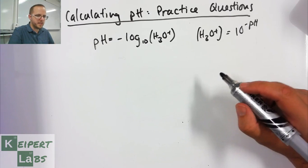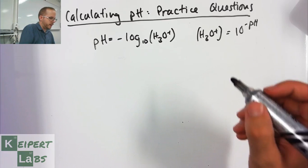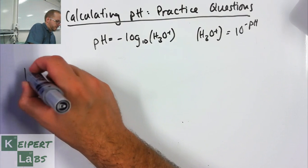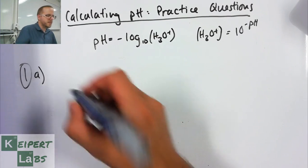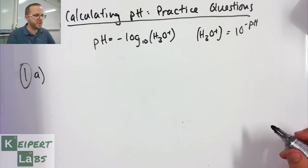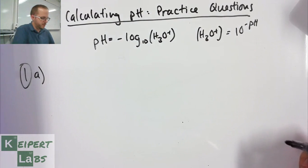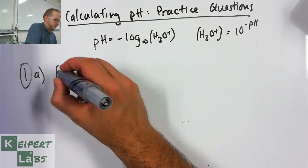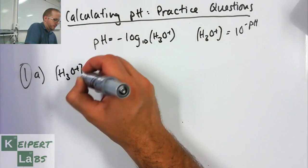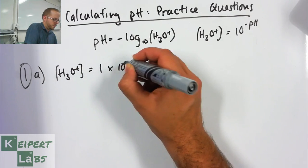Let's have a quick look at exercise 1a. We're asked to calculate the pH of a solution with a hydronium ion concentration of 1 times 10 to the minus 4 moles per liter.